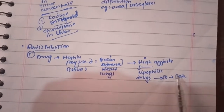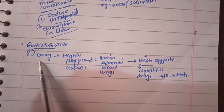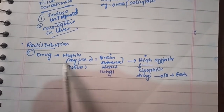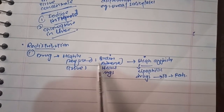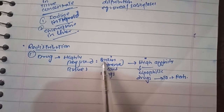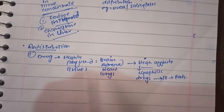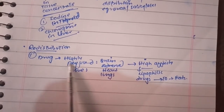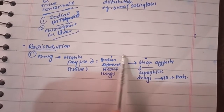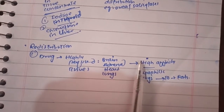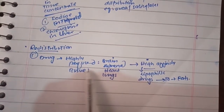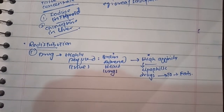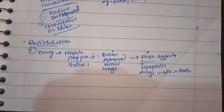So simply, the drug first reaches the highly perfused areas and is distributed there first. Then from here, the drugs are distributed to some other areas — the high-affinity tissues. This is called redistribution: first distribution is done to the highly perfused tissues, then distribution is done again to the high-affinity tissues. I hope the concept is clear. Thank you for watching.